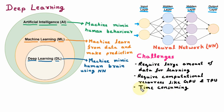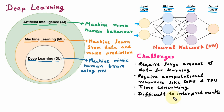The next challenge is it is difficult to interpret results. Deep Learning models are very complex — we cannot assume which decision they will give, so it is very difficult to find which result they are going to provide. The next challenge is Overfitting. Deep Learning models must be accurate, and for that they are trained many times. But because of the multiple-time training, they become inaccurate for new data. These all are the challenges of Deep Learning.